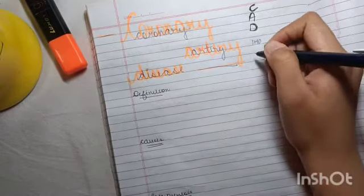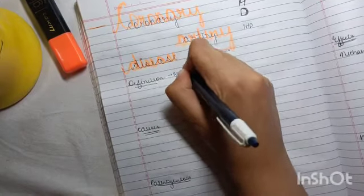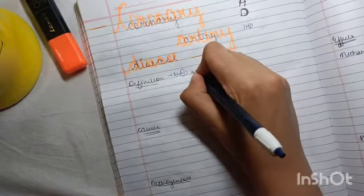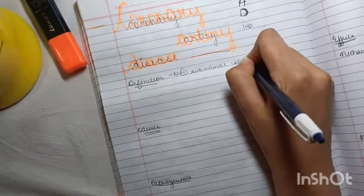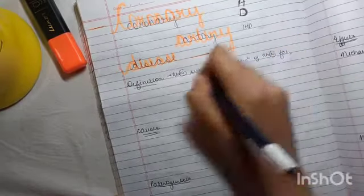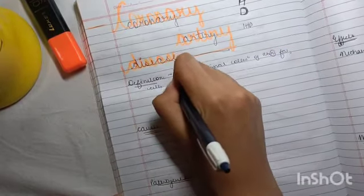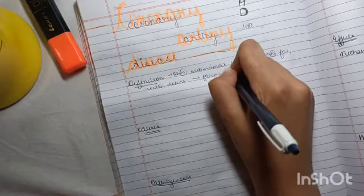Coming to the definition, it is a sub-intimal abnormal collection of abnormal fat cells and debris forming an atherosclerotic plaque.